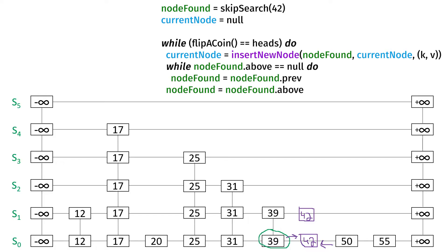Again, we have to manipulate references. We go up and set the above reference of the current 42 node to the new node 42. But now we have to backtrack a little bit — we go left and check to see if this node has an above reference, and it does. So now that we're on the next level, 39's next reference was positive infinity and now it has to be 42. Positive infinity's previous reference was 39 and now it has to be 42. And 42's below reference is the node we inserted previously.